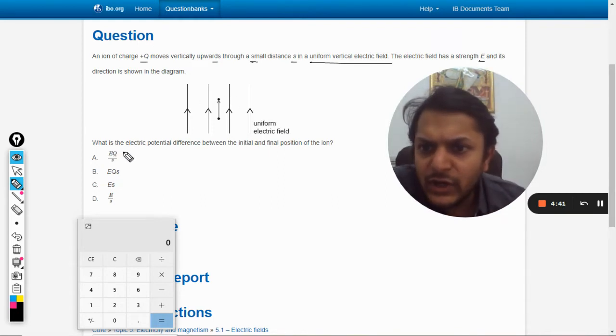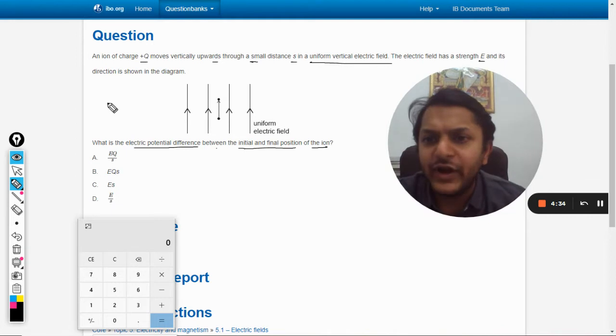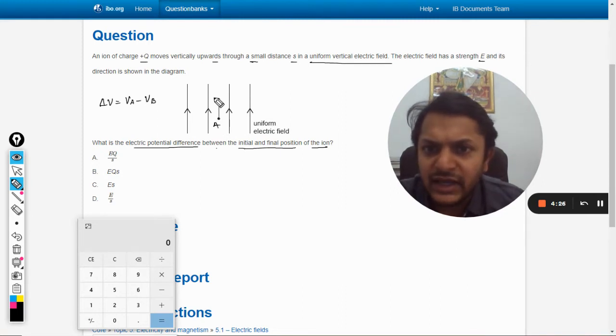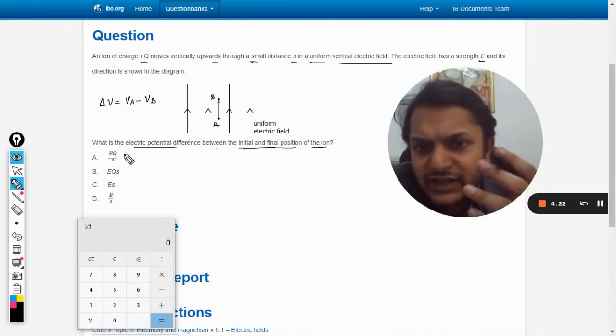What is the electric potential difference between the initial and final position of the ion? So we need to find delta V, that is Va minus Vb. This point will be A, this point will be B. So we need to find the potential difference.